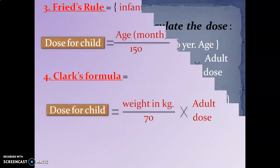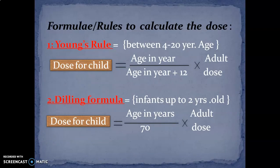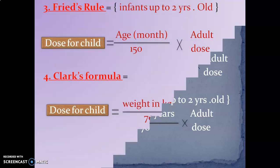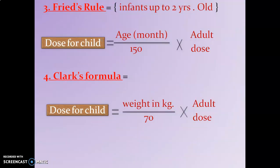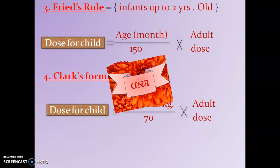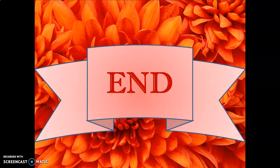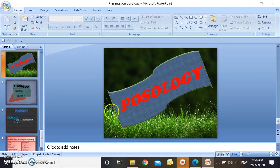To quickly revise: Young's formula = age in years ÷ (age in years + 12) × adult dose. Dilling's formula = age in years ÷ 70 × adult dose. Fried's rule = age in months ÷ 150 × adult dose. Clark's formula = weight in kg ÷ 70 × adult dose. This is about Posology — revise it and remember the formulas. Thank you.